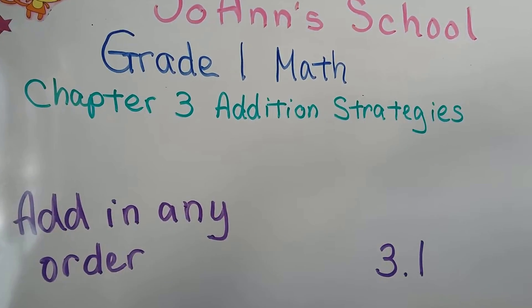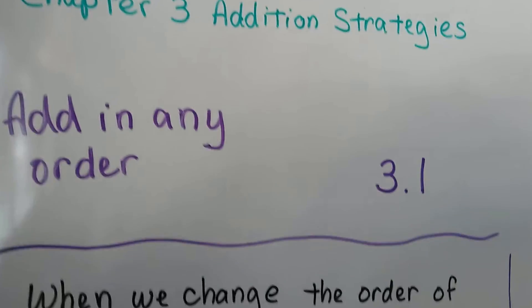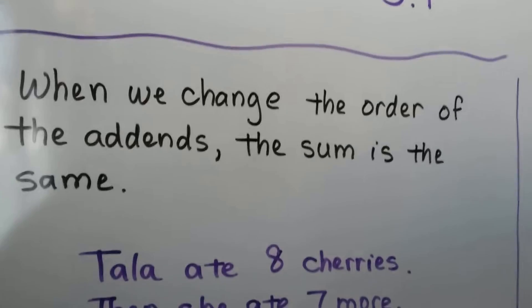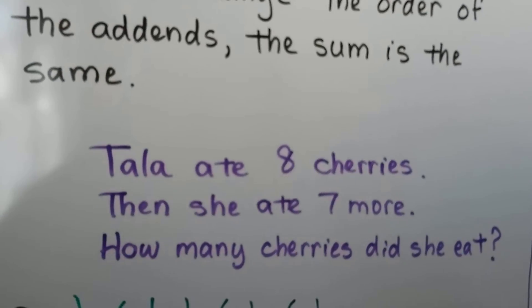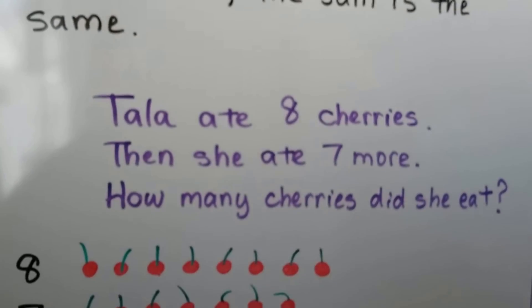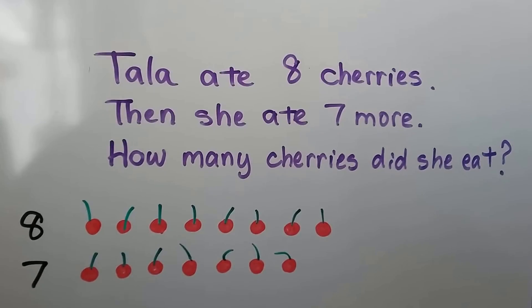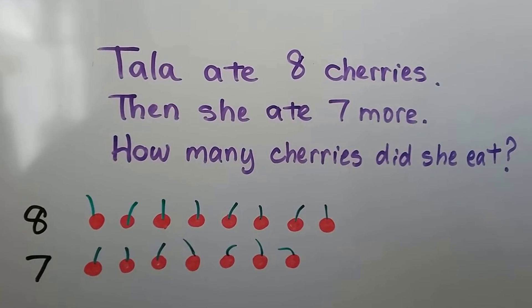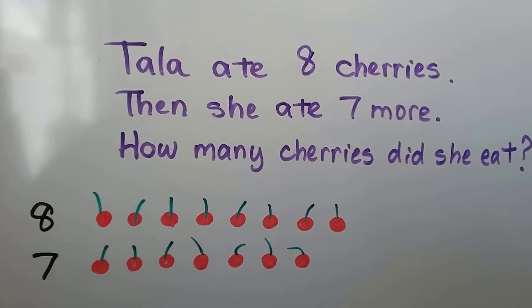Add in any order — lesson 3.1. When we change the order of the addends, the sum is the same. Tala ate 8 cherries, then she ate 7 more. How many cherries did she eat?